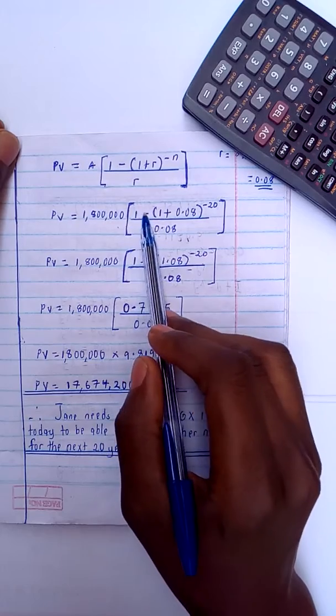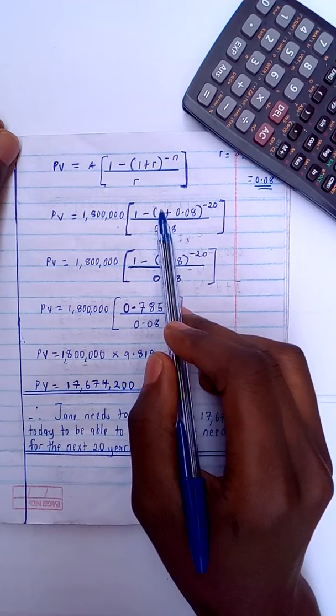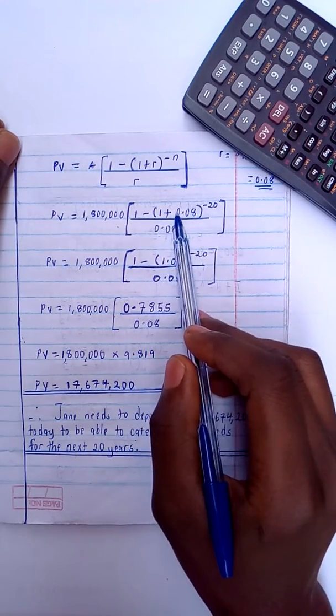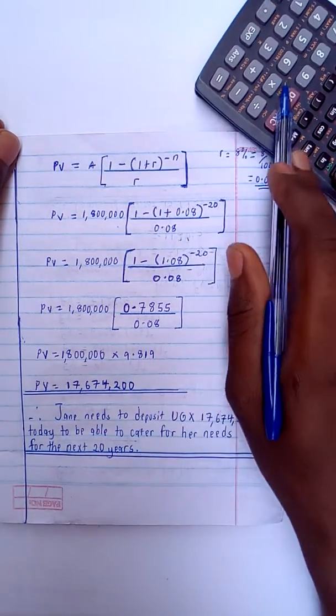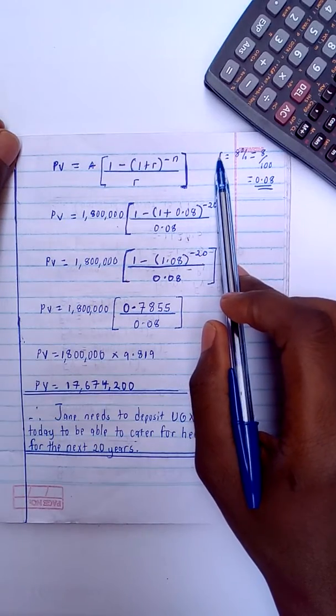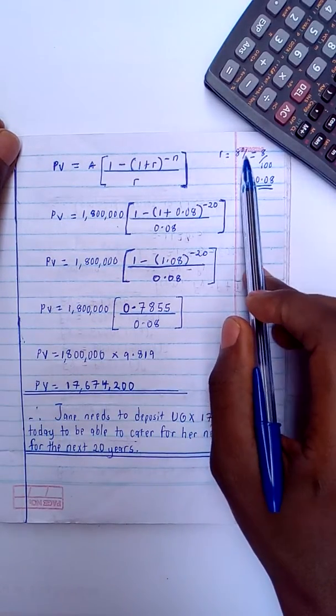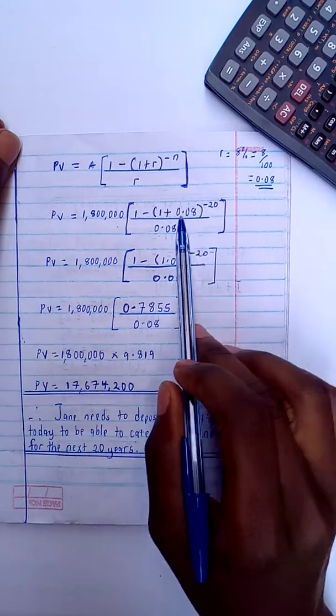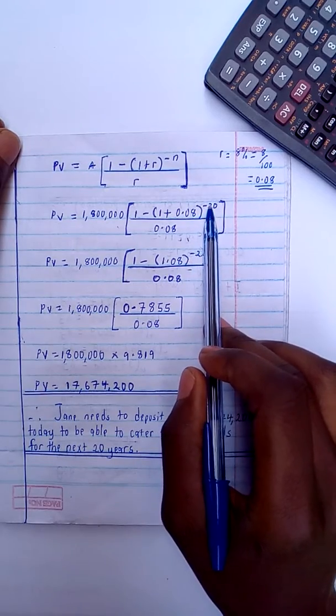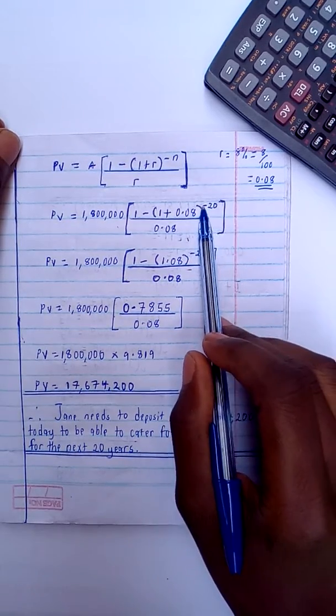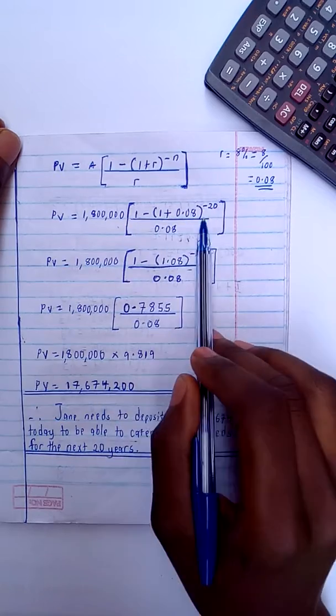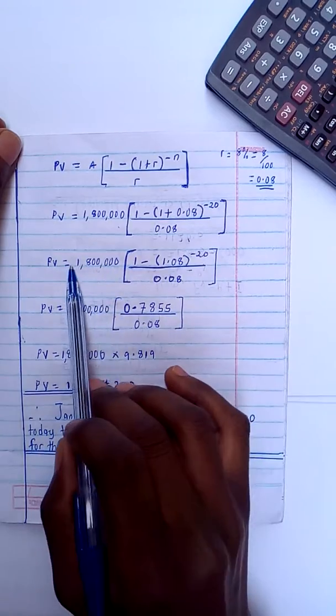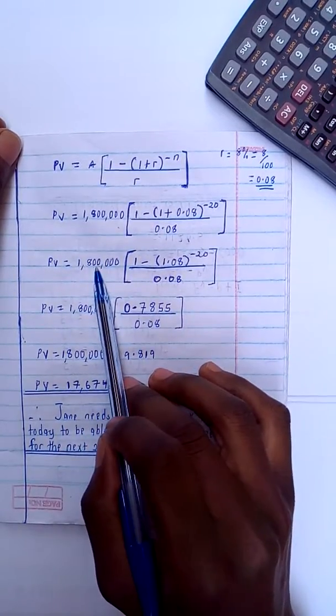And then square brackets: one minus bracket one plus 0.08, this is whereby I say r, which is the interest rate, is equal to 8%, which is equal to 8 divided by 100, giving you 0.08, which I come and I drop here. We already know the n, which is 20 years. Then minus 20 years divided by 0.08.